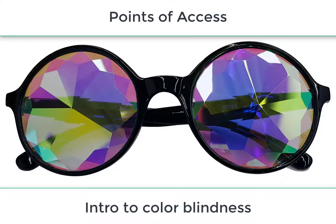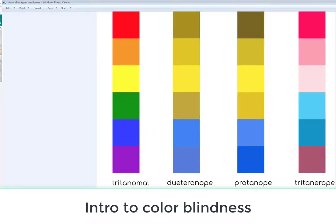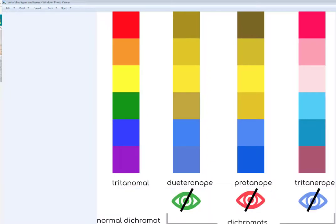Introduction to color blindness. This graphic illustrates three different types of color blindness. The first being not able to see green, the second not being able to see red, and the third not being able to see blue.